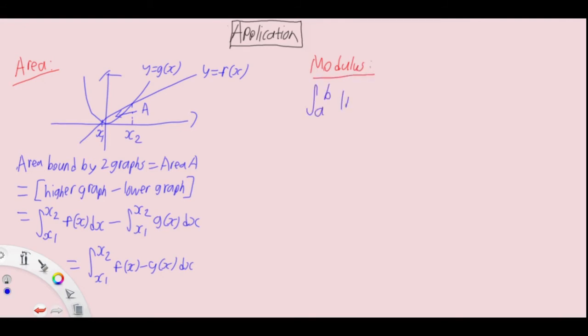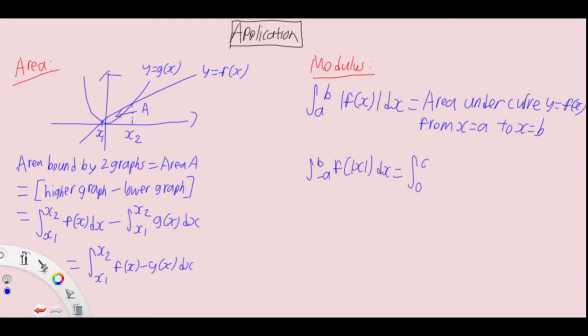For integration with modulus functions: integral of |f(x)| from a to b is the area between the curve and x-axis, or the area under the curve from x = a to x = b.